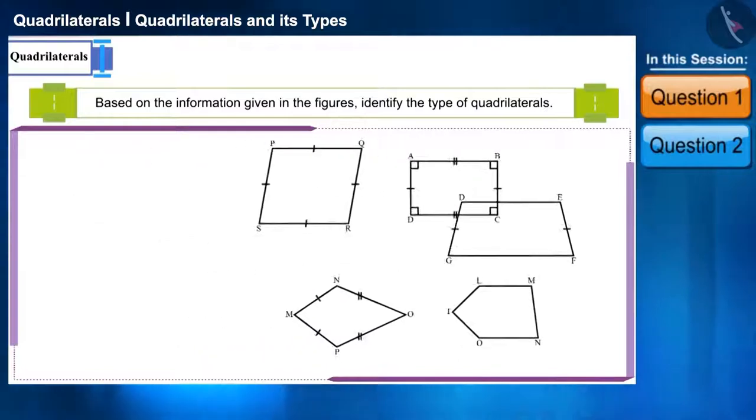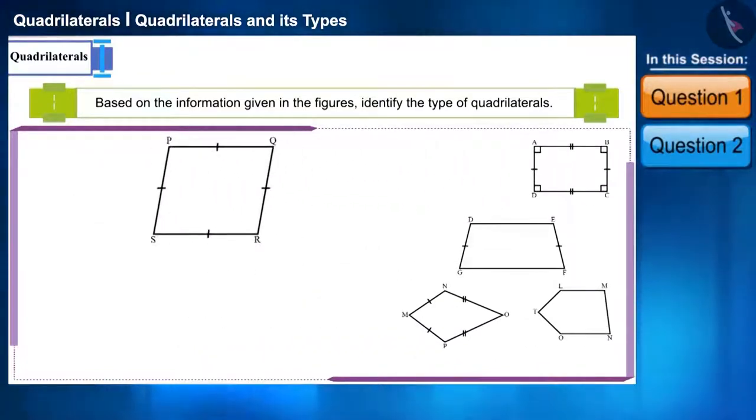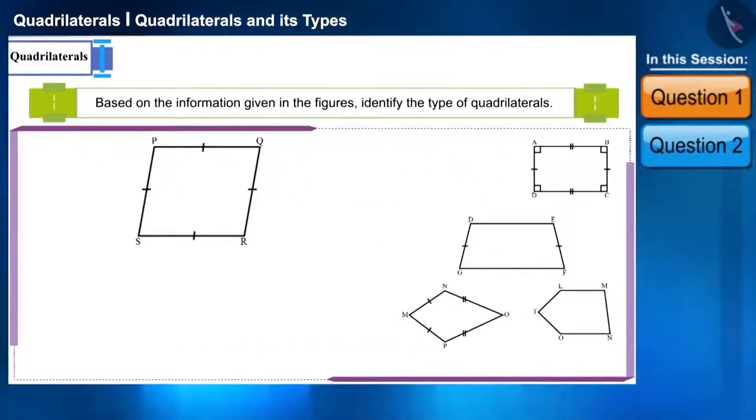Friends, look at the first quadrilateral PQRS. Its four sides are equal and both pairs of opposite sides are parallel. Therefore PQRS is a rhombus. Can we also call it a parallelogram?